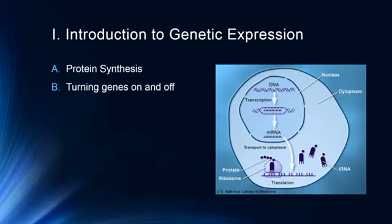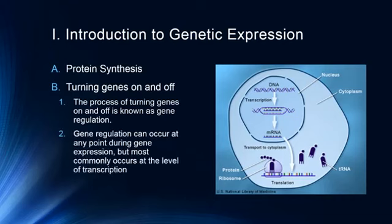One of the biggest things that happens is genes can get turned on and off. The process of turning genes on and off is known as gene regulation, and gene regulation can occur at any point during gene expression but most commonly occurs at the level of transcription.